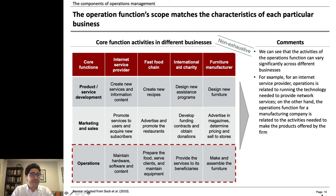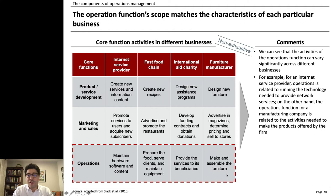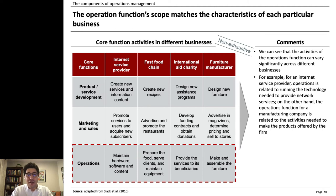The components of operations activities differ from one type of organization to another. Let's take this example — we have four different types of businesses: an internet service provider, a fast food chain, an international aid charity, and a furniture manufacturer. In a furniture manufacturer, operations is making and assembling the furniture. In an international aid charity, it's providing services to its beneficiaries. In a fast food chain, it involves preparing the food, serving the clients, and maintaining the equipment. And in an internet service provider, it requires maintaining hardware, software, and content. So we can see different characteristics for different types of businesses, but it's all operations.